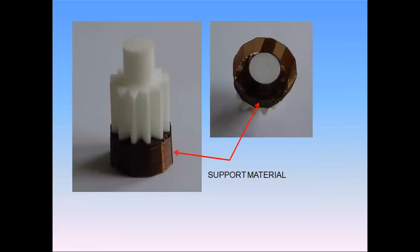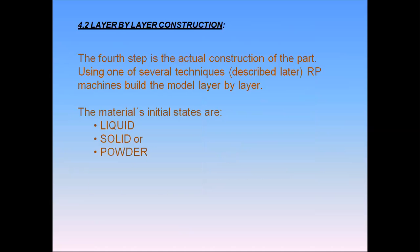Support material is also required in some processes in which we add the material layer by layer. The next step is layer by layer construction, which is the most important step in the rapid prototyping process where we actually add the material layer by layer. The material's initial state can be liquid, solid, or powder form.